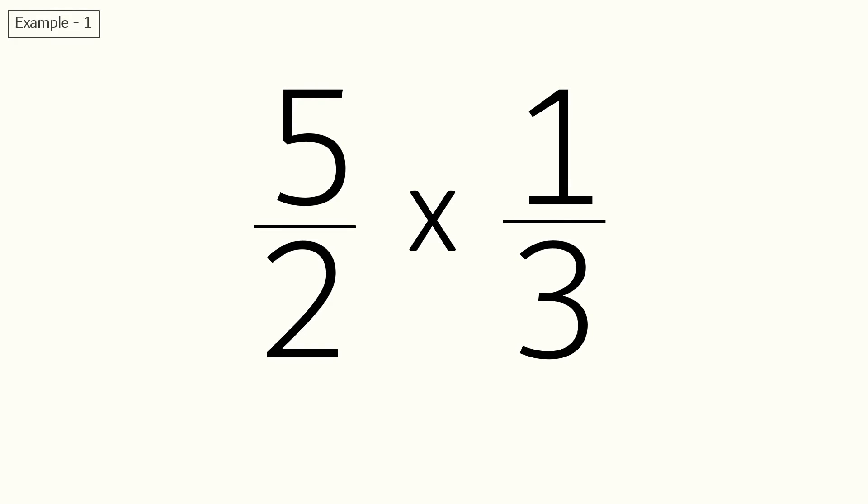In our first example we have to multiply 5 by 2 into 1 by 3. To solve it, we will simply multiply the numerators 5 and 1 to get 5, and then the denominators 2 and 3 which is 6. So our answer is 5 by 6.